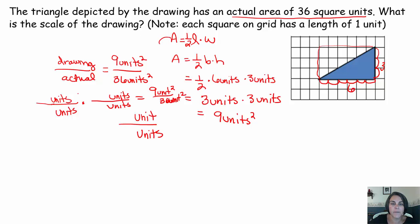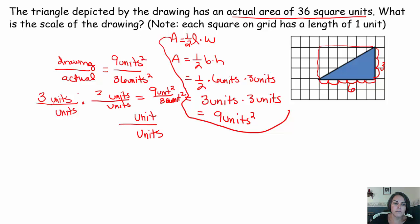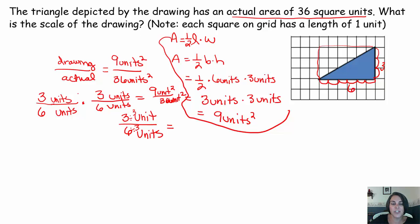Let me think about this. What times itself is nine? Three times itself is nine. What times itself is 36? Six times itself is 36. So my actual scale is three units to six units. Simplifying three over six by dividing top and bottom by three, the scale for this drawing is one half.